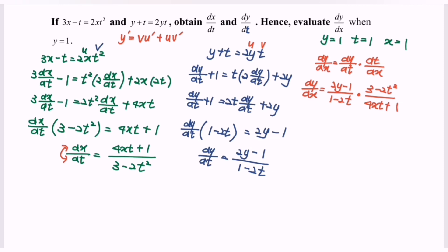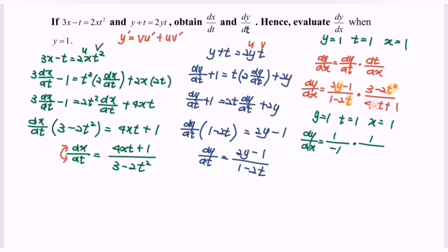Now substitute the values. With y equals 1, t equals 1, and x equals 1: the numerator becomes (2·1 minus 1)·(3 minus 2·1²) which gives 1·1 equals 1, and the denominator is 4·1·1 plus 1 equals 5. So dy/dx equals negative 1 over 5 when t equals 1, y equals 1, and x equals 1.